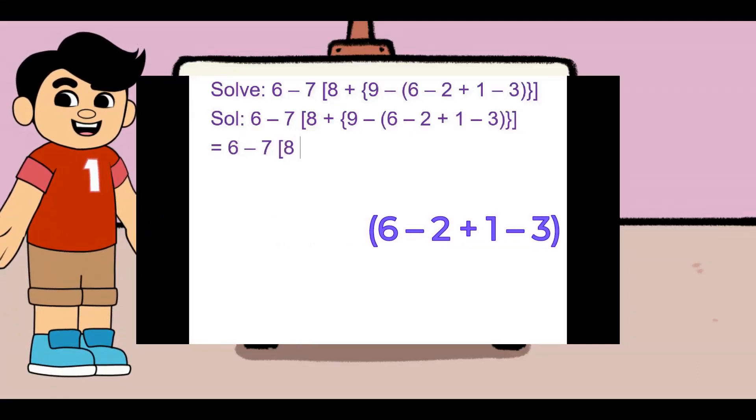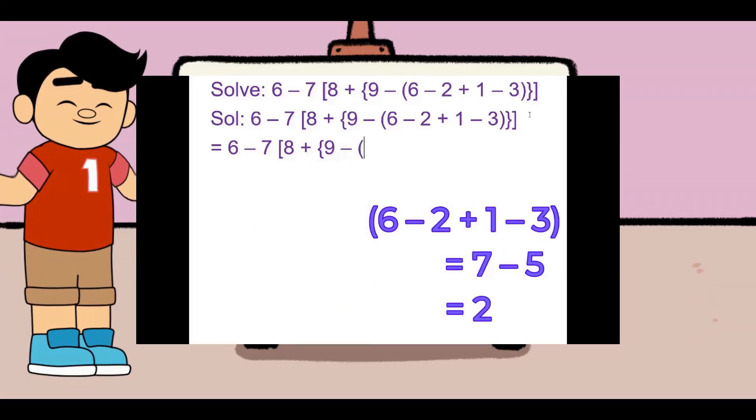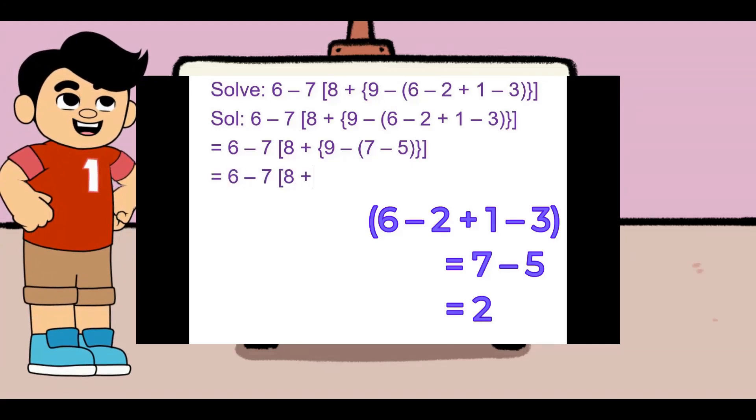According to BADMA's rule, we should first solve the small brackets. The sum of the positive numbers in small brackets is 7, and the sum of the negative numbers is 5. Here the sum of positive numbers is 2 more than the sum of negative numbers.